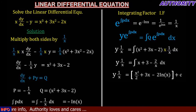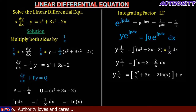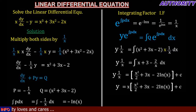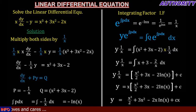So we have y times 1 over x equals x squared over 2 plus 3x minus 2 ln(x) plus C. We want to make y the subject. So we multiply both sides by x, giving us y equals x times (x squared over 2 plus 3x minus 2 ln(x)) plus Cx. Expanding, we get y equals x cubed over 2 plus 3x squared minus 2x ln(x) plus Cx.